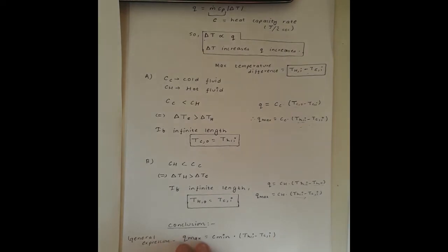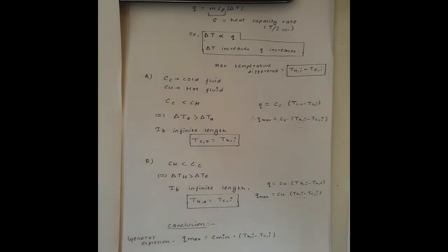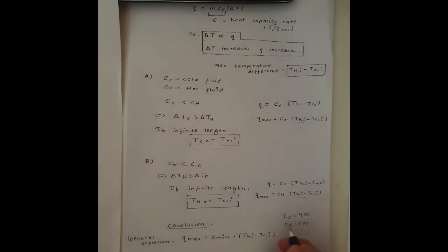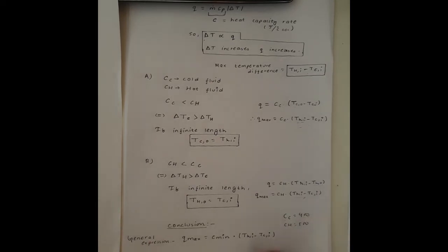In this case, THO is replaced by TCI in the hot fluid expression, giving Q_max = CH × (THI − TCI). We can conclude that Q_max equals C_min — the minimum heat capacity rate of either fluid — times the maximum temperature difference (THI − TCI). For example, if CC = 400 and CH = 500, then CC is C_min, and it experiences the maximum temperature difference to give Q_max.